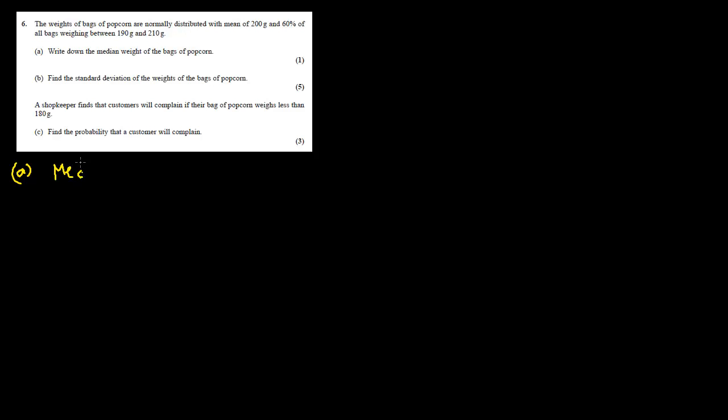We know a normal distribution is symmetric, so the mean, mode, and median are all equal. Therefore, the median weight would be equal to 200 grams, the same as the mean.